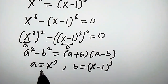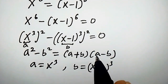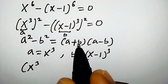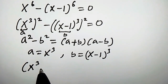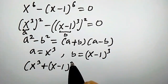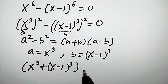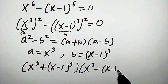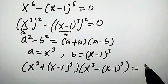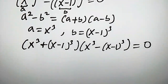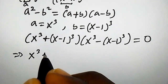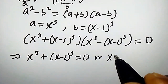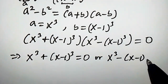So a equals x cubed and b equals x minus 1 cubed. We plug the values of a and b into the difference of squares formula. We get: x cubed plus x minus 1 cubed, times x cubed minus x minus 1 cubed, all equals to 0.